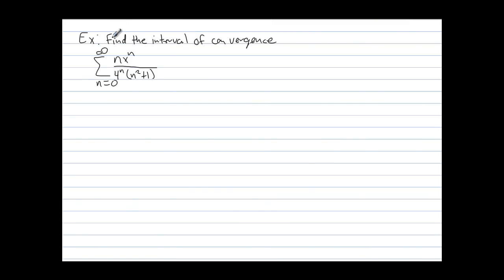In the first example, we want to find the interval of convergence. We have the series n times x to the n over 4 to the n times n squared plus 1. Notice we have a variable x in this one, so this series is going to converge dependent upon the values we assign x.